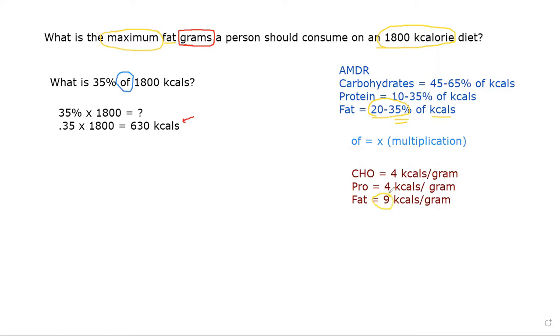Since we are solving for fat grams we will use the fat calories of 9 per gram. Now we have to decide how to convert the 630 calories into the fat grams. Do we multiply or do we divide? Probably the best way to remember this is if you are going from grams to calories you multiply. If you are going from calories to grams you divide. This should make sense because the grams are usually smaller than the calories.